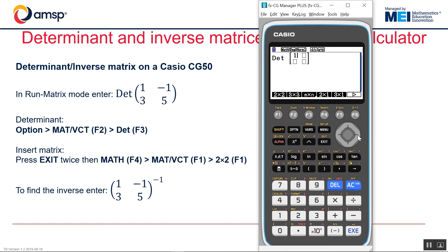And then I can enter these values: 1, negative 1, 3, 5. There's the determinant.